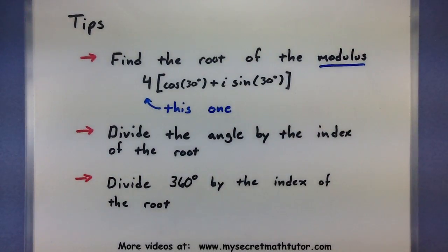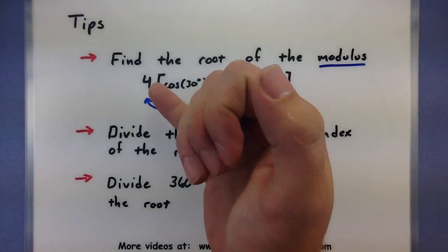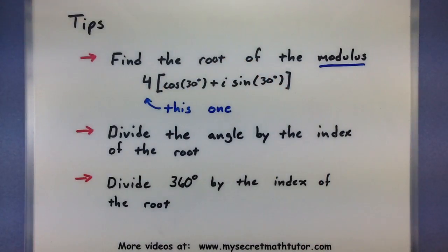When using de Moivre's theorem, the very first thing we want to do is take the root of the modulus. That's the number that sits right out front of your complex number. If we're doing something like a square root, then we'll take the square root of that number. If we're doing the third root of the complex number, then we'll take the third root of that number. Whatever it is, we will take that root.